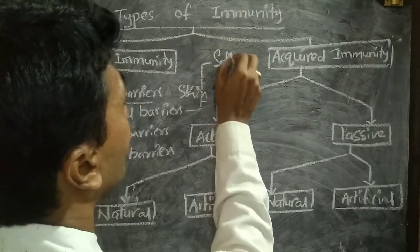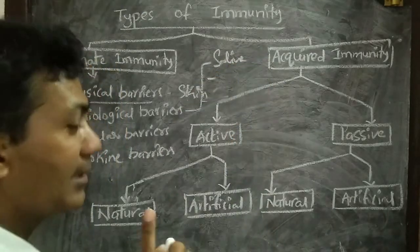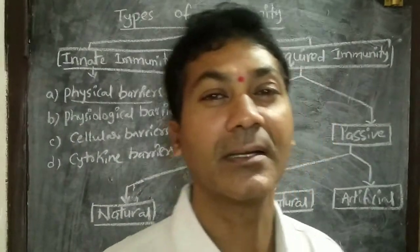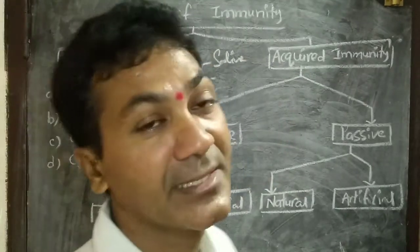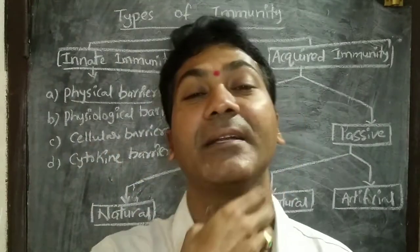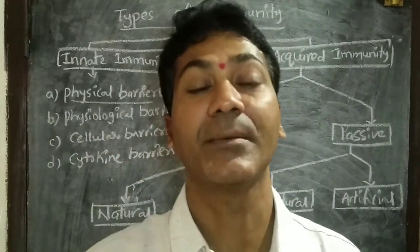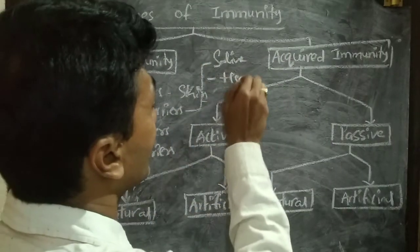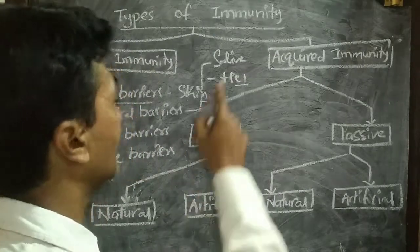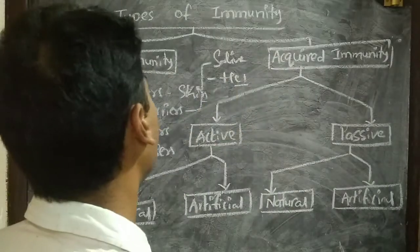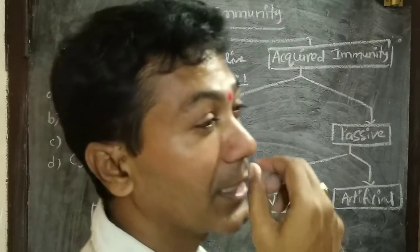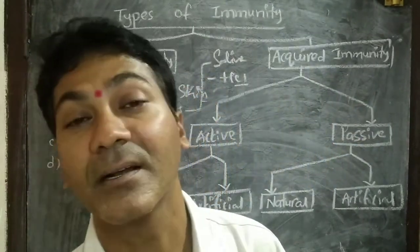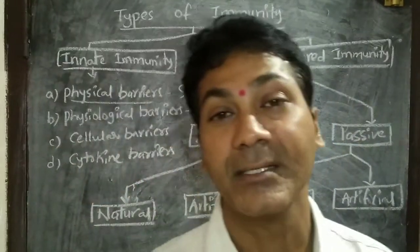Saliva is produced in the oral cavity. Even if a pathogen is not killed by saliva and its enzymes, and the bacteria enters the stomach, the stomach has a powerful secretion — HCl, hydrochloric acid — which is also a physiological barrier. If pathogens enter through the nostrils, there is a mucus lining that does not allow them to get inside.